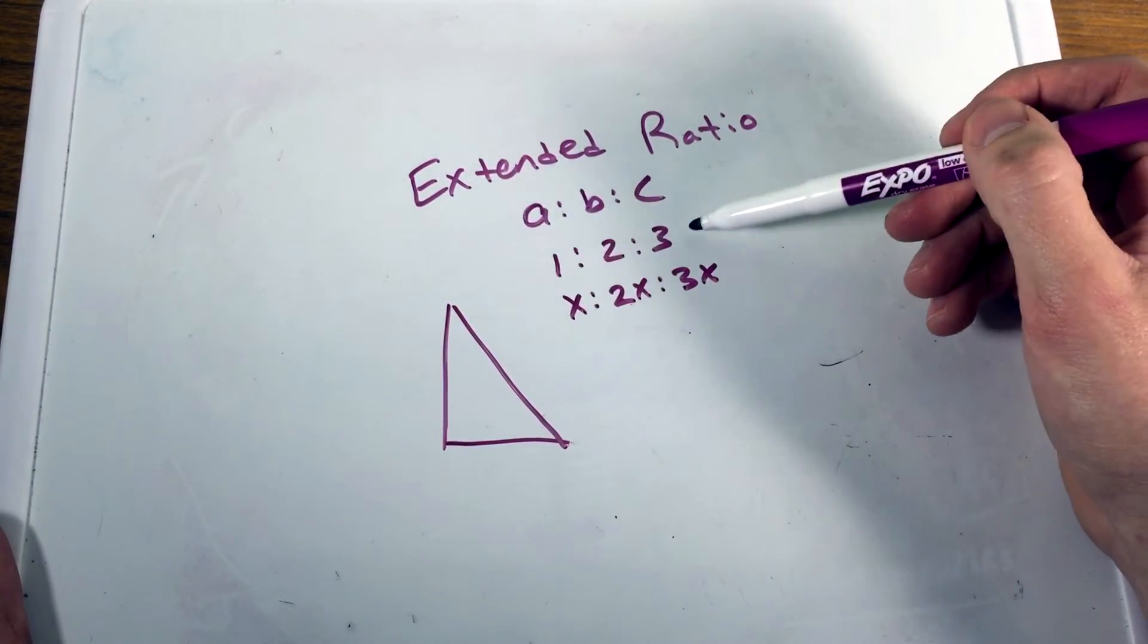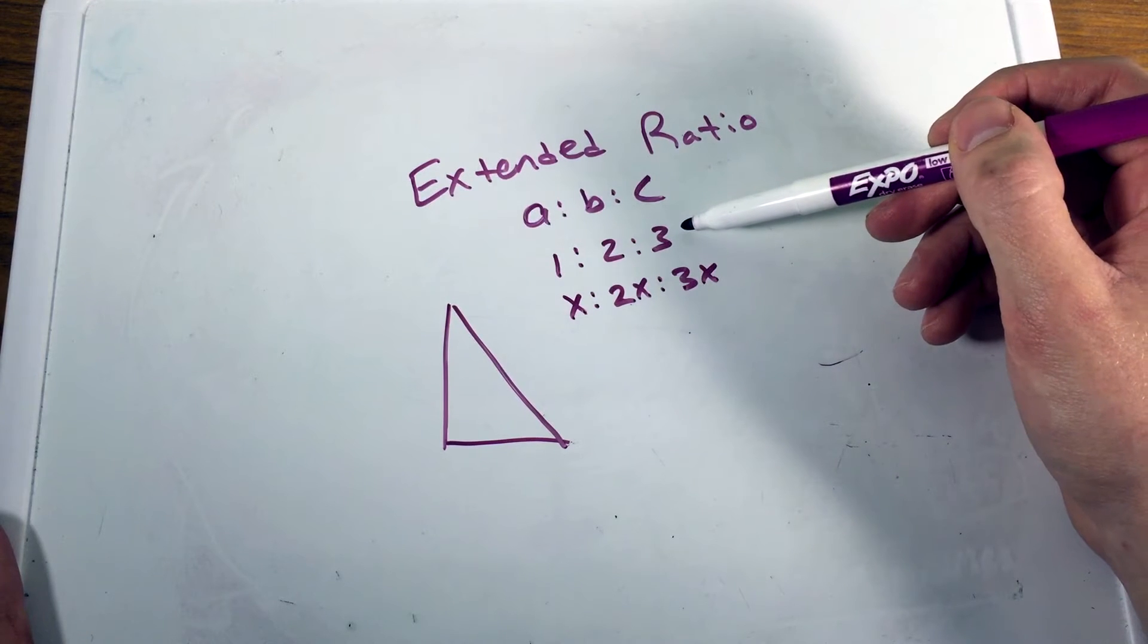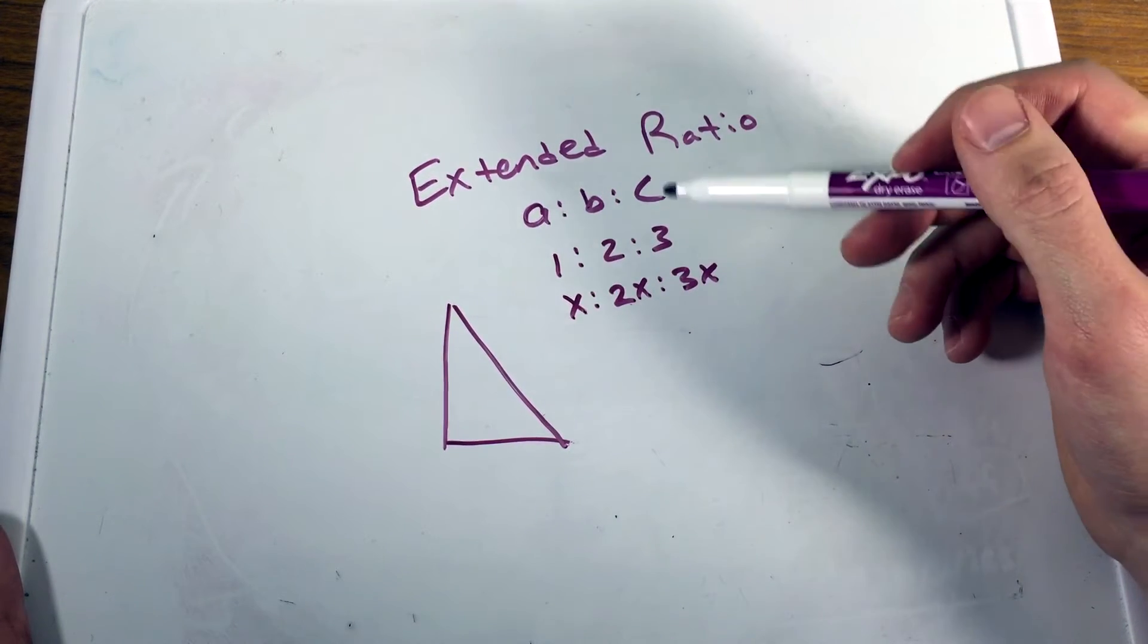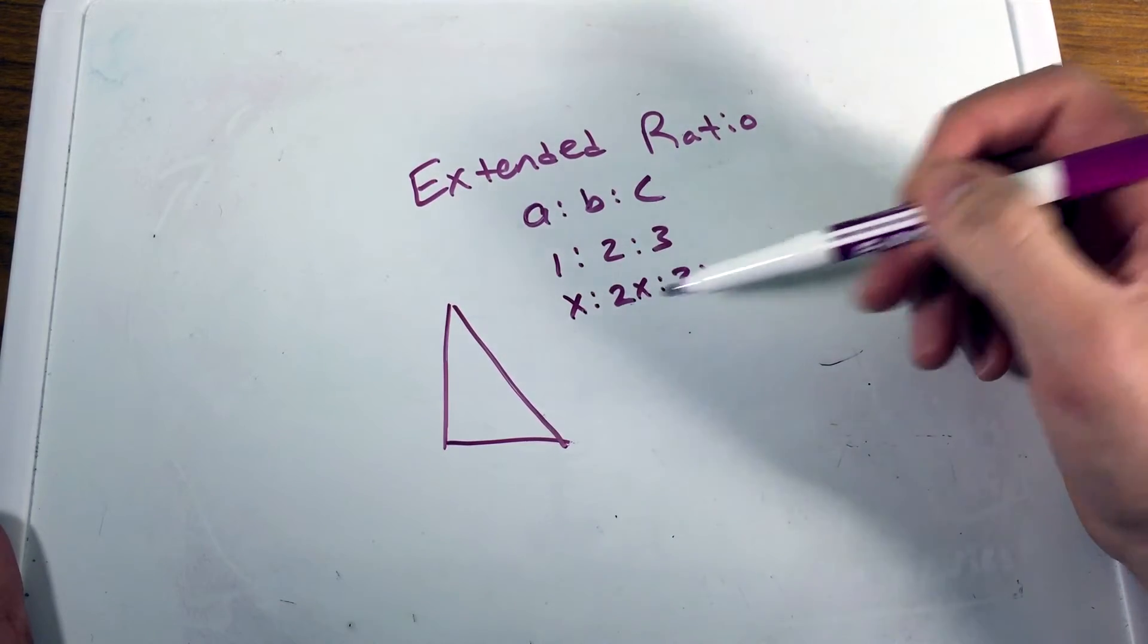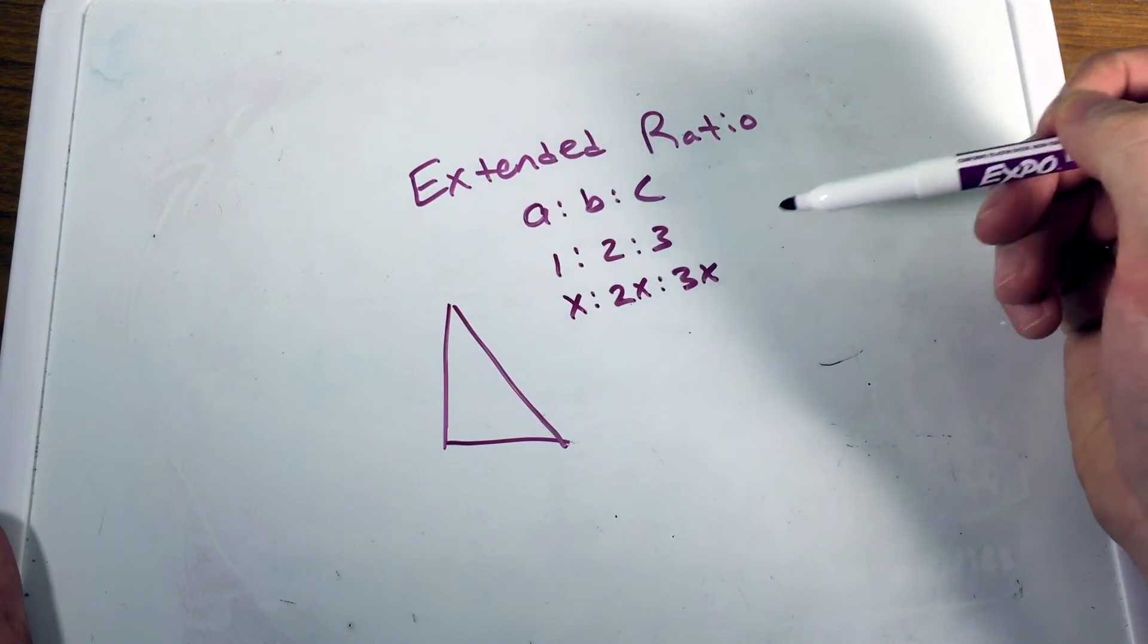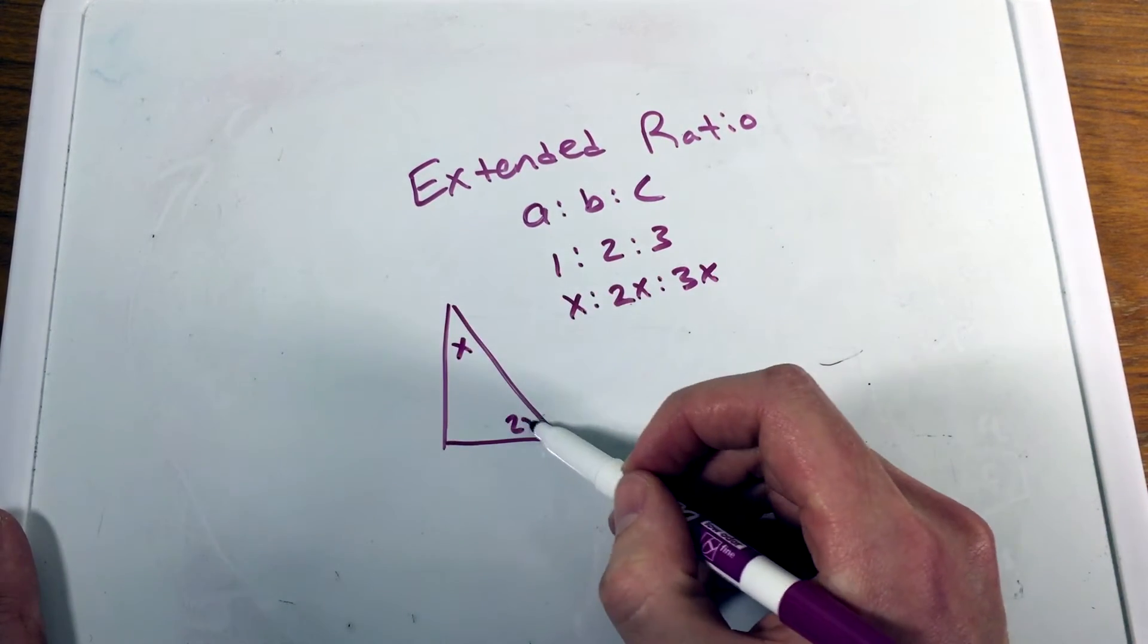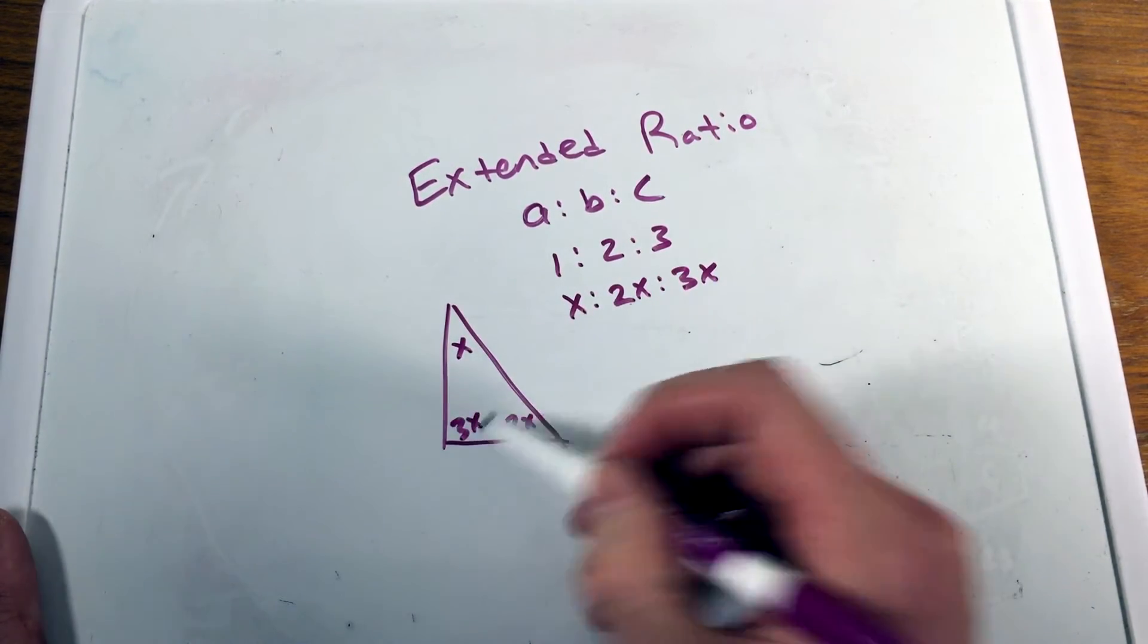We're putting X next to each one of these because a one to two to three ratio can be very similar to an X to two X to three X where we can put any number we want in for X and we'll keep the same ratio. And so by doing so, if I say that this interior angle is X, this one is two X, and this one is three X.